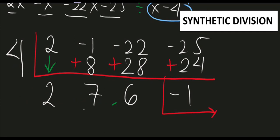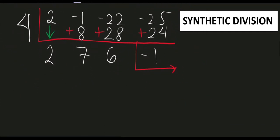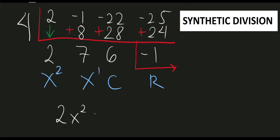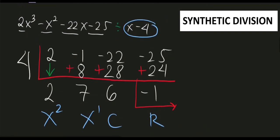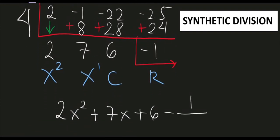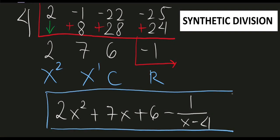Let's assign names to our terms — constant, first degree, second degree. The final answer is 2x squared plus 7x plus 6. Since the remainder is negative 1, we include minus 1 over our original divisor x minus 4. So the final answer is 2x squared plus 7x plus 6 minus 1 over (x minus 4). Thank you so much, everyone, and God bless.